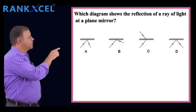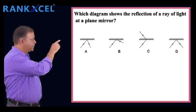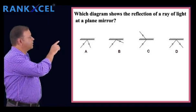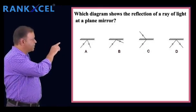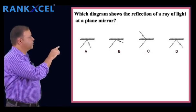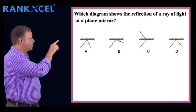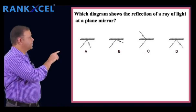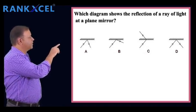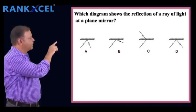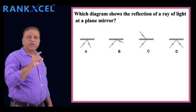In this, diagram C looks like the correct one, but it's not. The reason is the incident ray cannot pass through the surface of the mirror. Diagram D is correct. If you draw a normal, you will find that the angle of incidence is equal to the angle of reflection.